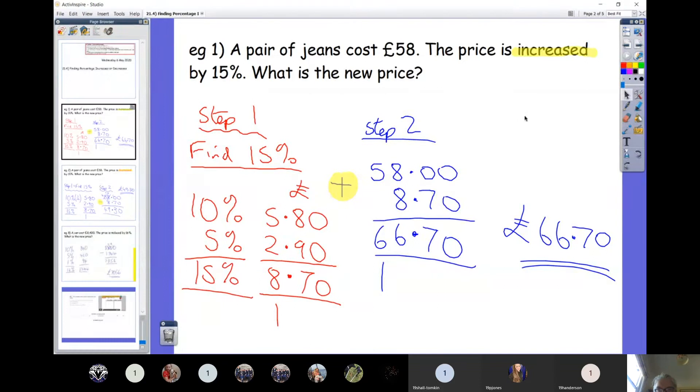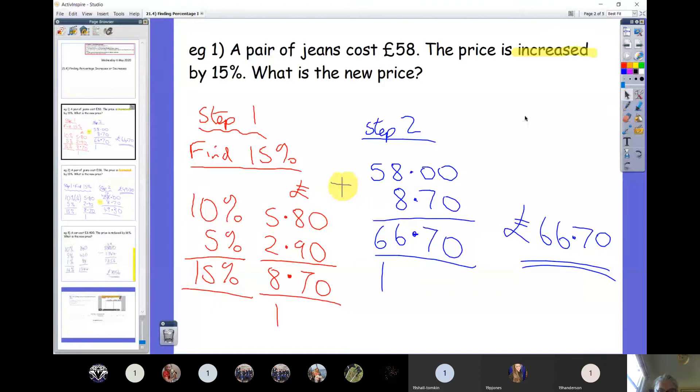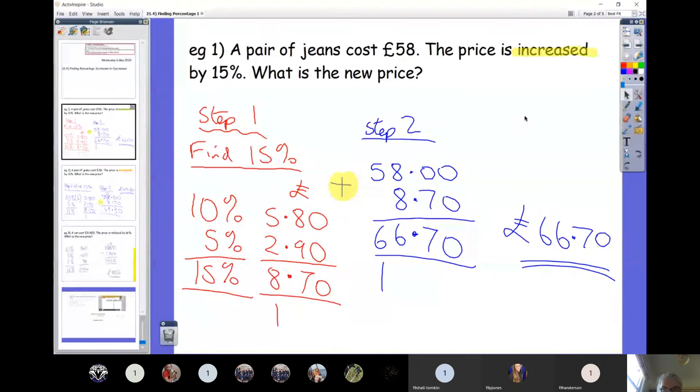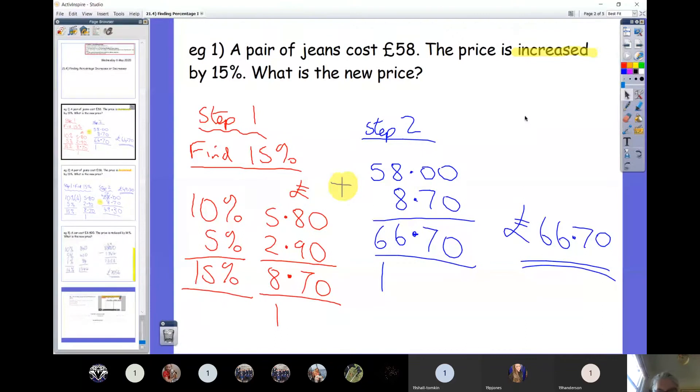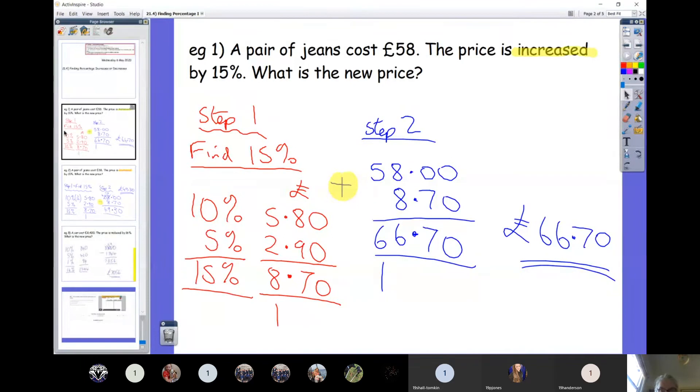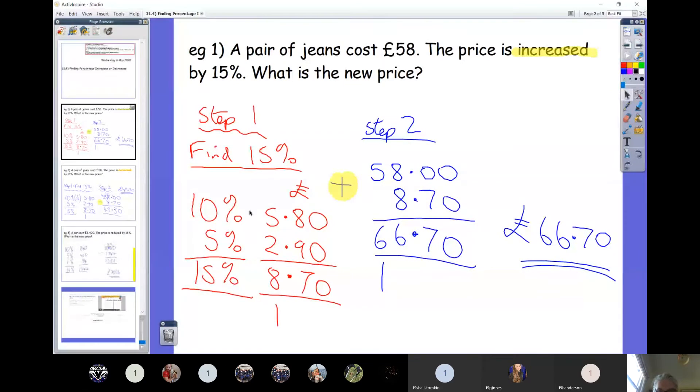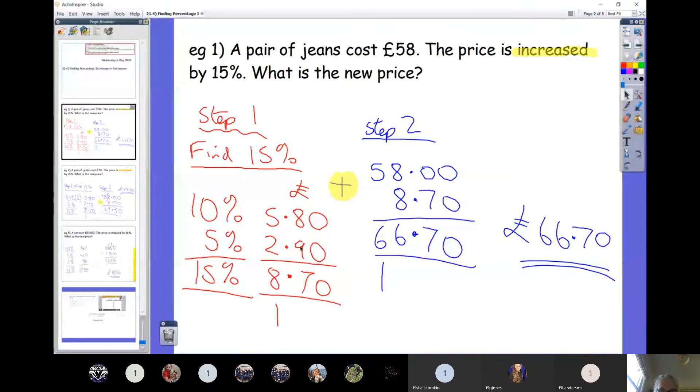Here's example number one. A pair of jeans costs £58. The price is increased by 15%. What is the new price? Step one is exactly what you did last lesson. You start off by working out 10%, which would be a tenth of £58, which would be £5.80. Then you work out 5% by halving the 10%, and half of £5.80 is £2.90. So therefore, our 15%, which is obviously adding the 10% and the 5%, we add the £5.80 to the £2.90 to get £8.70.